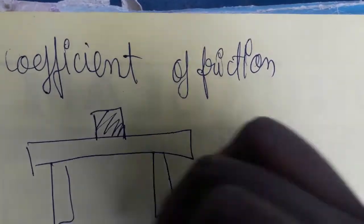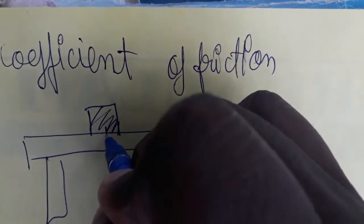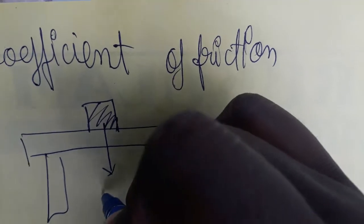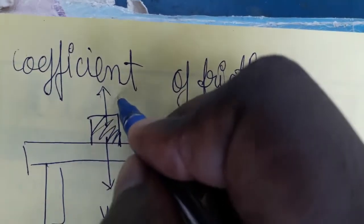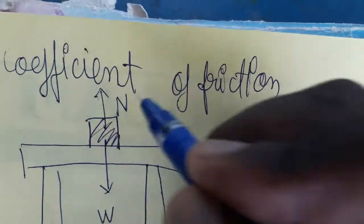One object is on the table. The weight of the object will be acting downwards. The normal reactional force will be upwards, the normal force will be upwards.